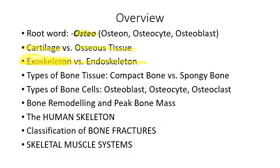If something hits the human body, we get a bruise and can be damaged quite badly because we have an endoskeleton. Insects, crabs, and lobsters can be hit and sustain no damage because they have a shell on the outside. If you've ever eaten a crab or lobster, once you break the exoskeleton off, the tissue inside is helpless — you don't find a skeleton inside the crab because its skeleton is on the outside.